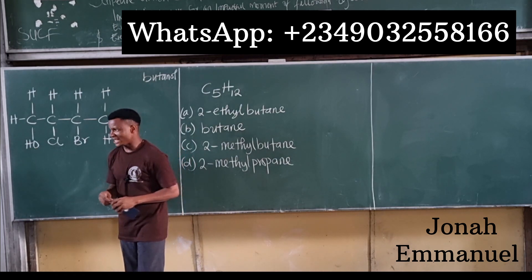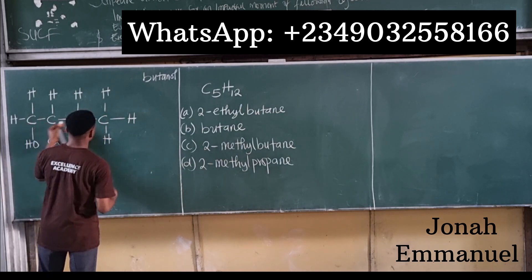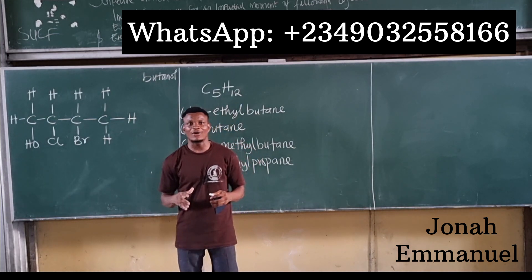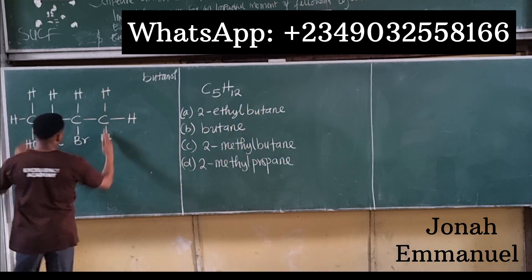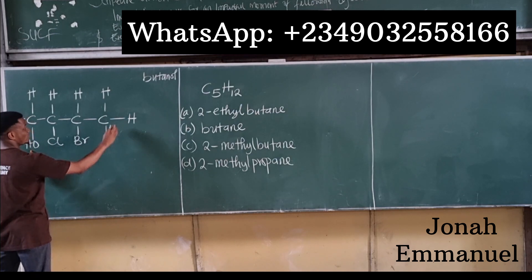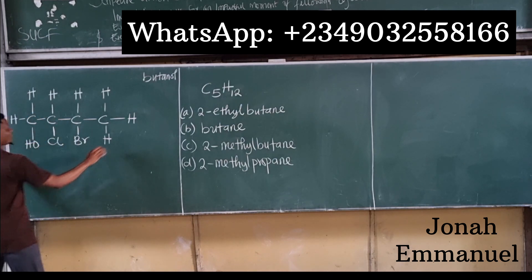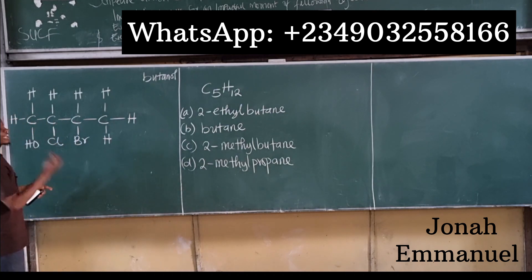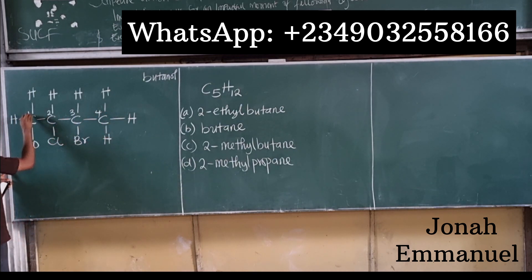Next, I need to decide the numbering direction. I name it from the direction that gives the functional group (OH) the lowest locant. If I move right to left, OH is on carbon four. But if I move left to right, OH is on carbon one. Taking the least number, I number it so carbon one bears the OH.